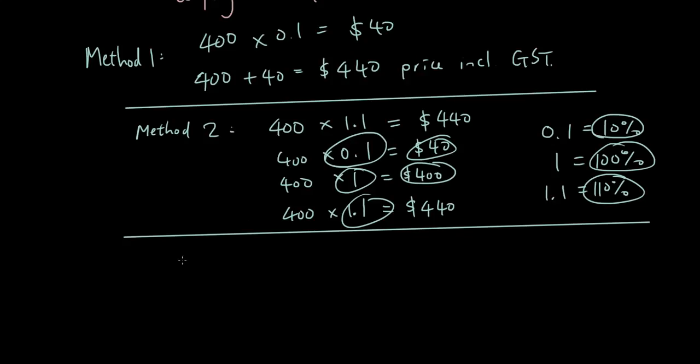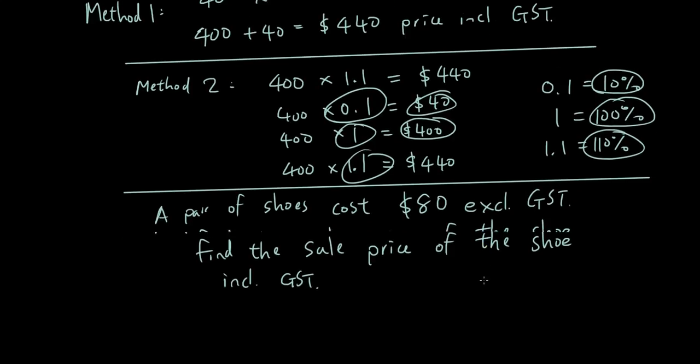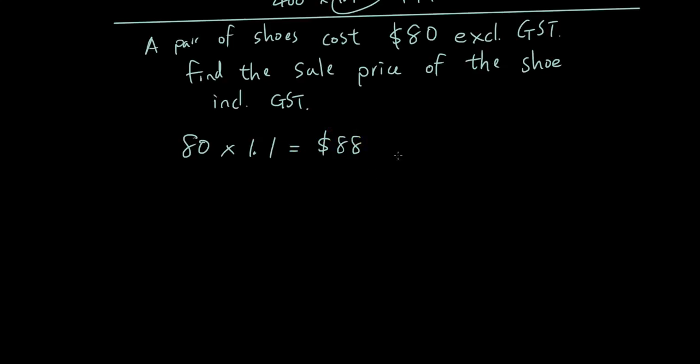So just one more with method 2. So a pair of shoes cost $80 excluding GST. Find the sale price of the shoe including GST. So again you go 80 times 1.1 which is $88 including GST and that is how much you have to pay as the customer.